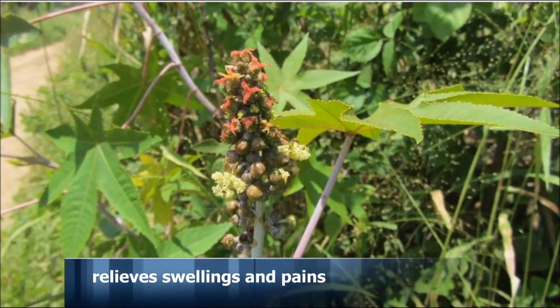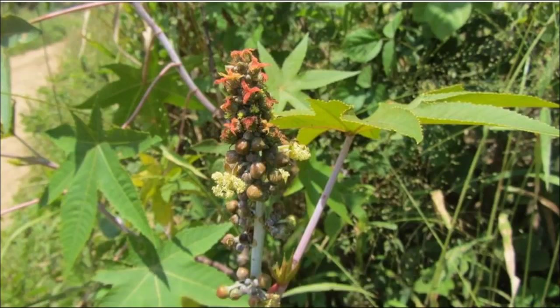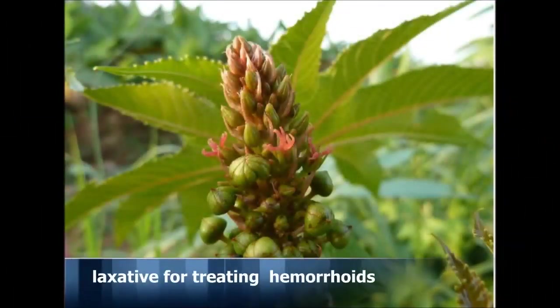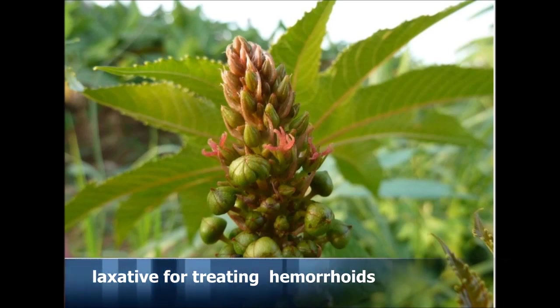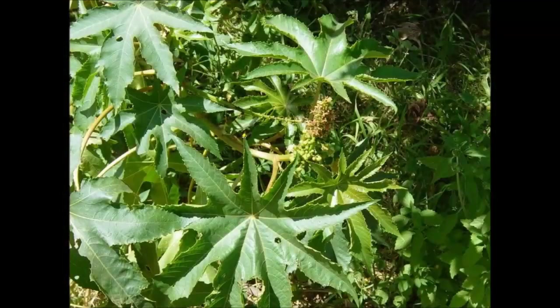The leaf decoction is a strong laxative and may be used as treatment for hemorrhoids. Boiling the leaves in potash produces a decoction used for treatment of jaundice. Crushed leaves mixed with lime are used as a massage to treat epilepsy in children. The root of the plant is used for toothache and headache.